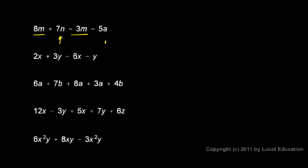so we can't combine these with the m's or with each other. So the only thing we can do here is combine the m terms. So 8m and minus 3m, that gives me a 5m, and then I still have the plus 7n and the minus 5a. So that's my answer, 5m plus 7n minus 5a.